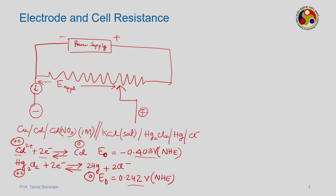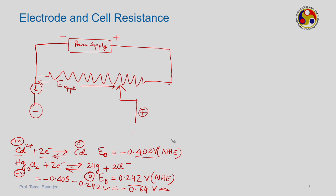The standard potential across the two is approximately −0.403 minus 0.24, giving roughly −0.64 V. So if I send an applied potential of −0.64 V, nothing will flow — I equals zero. If I send more than −0.64 V, current will flow. For example, sending −0.80 V means the rate of the cadmium reduction reaction increases.